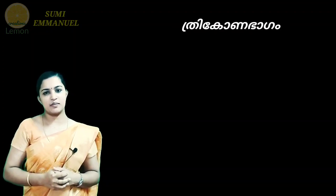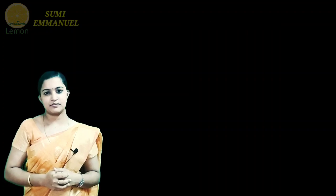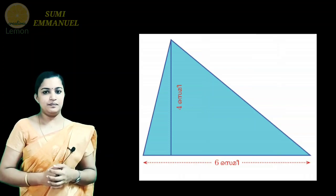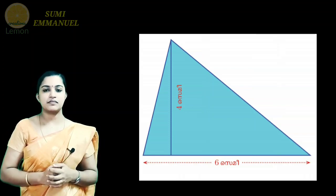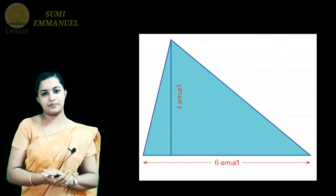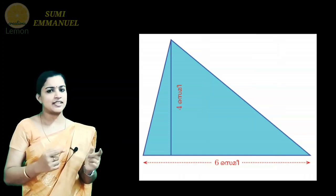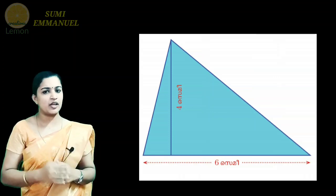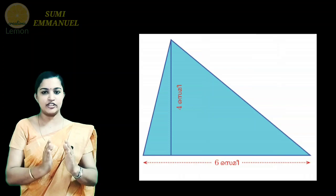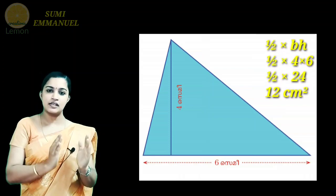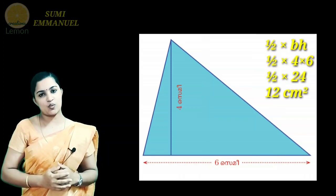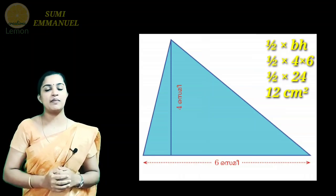Here is a triangle. Look at the triangle. The base is 6 cm. The height is 4 cm. The area of this triangle is half × base × height — half into 6 into 4. This is 12 cm squared.